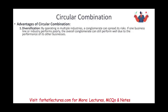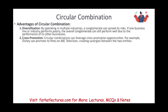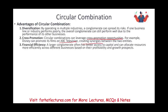Advantages of circular combination include diversification, cross-promotion, and financial efficiencies. Cross-promotion is particularly valuable — for example, Disney can promote their movies through ABC Television, creating synergies between the two entities. Financial efficiencies come from better access to capital and the ability to allocate resources more efficiently across businesses based on profitability and growth prospects, leading to cost reduction.